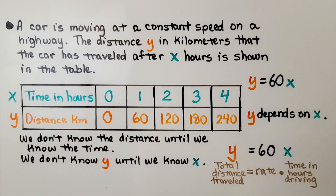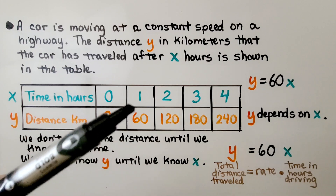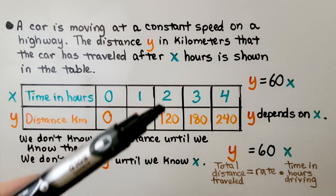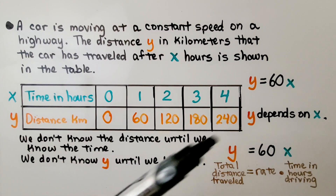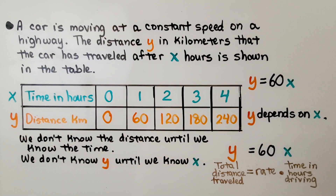A car is moving at a constant speed on a highway. The distance y in kilometers that the car has traveled after x hours is shown in the table. X is our time in hours and y is our distance in kilometers. If we drive zero hours, we go zero distance. One hour: 60. Two hours: 120. Three hours: 180, and so on. Y depends on x — we don't know the distance until we know the time. That makes y the dependent variable and x the independent variable.